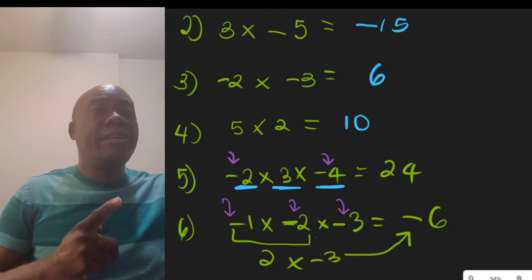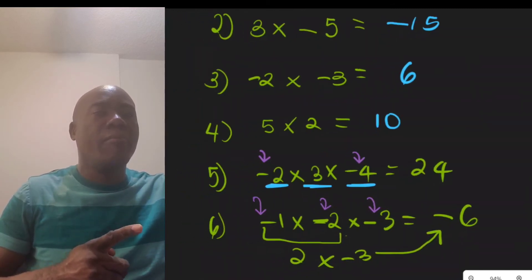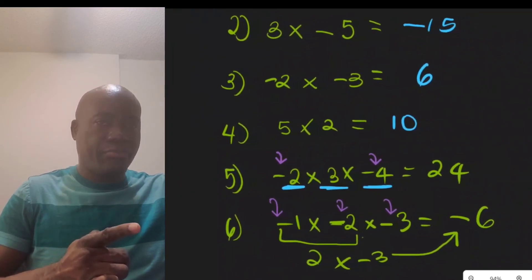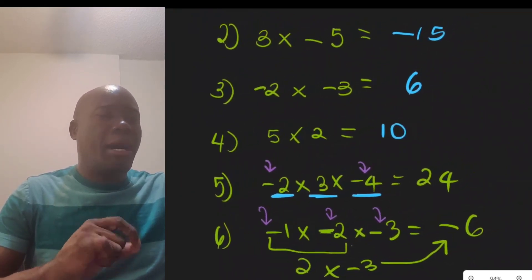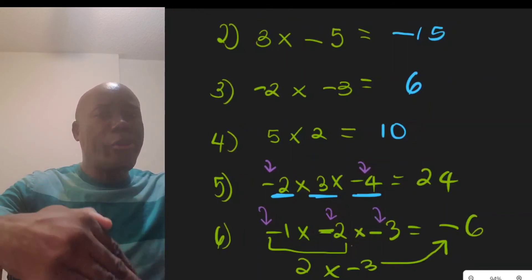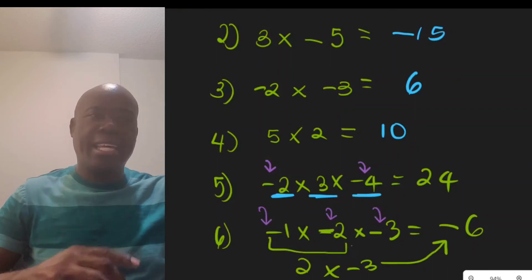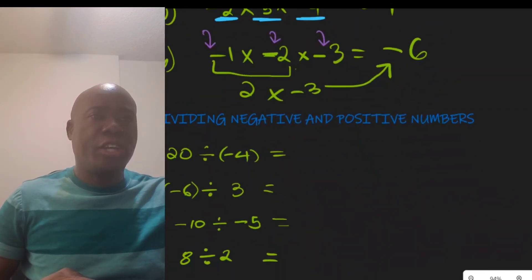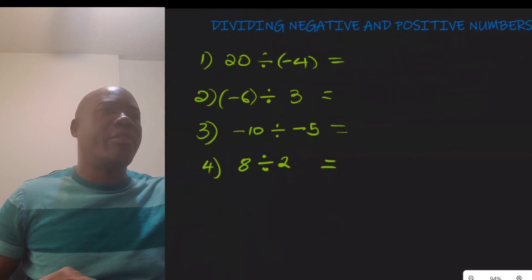To summarize: if we have an even number of negative numbers multiplying, the result is positive. If we have an odd number of negative numbers multiplying, the result is negative. Now let's move on to division.